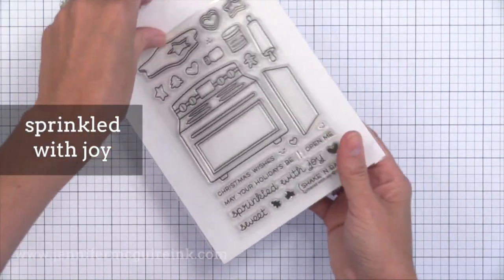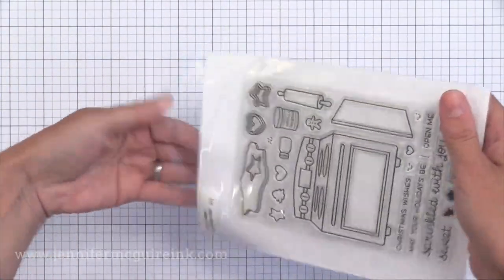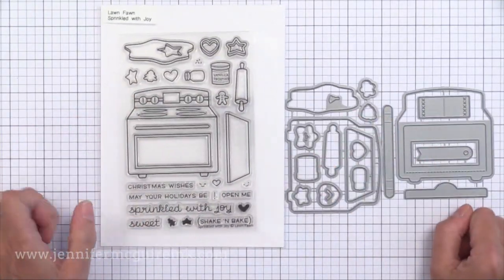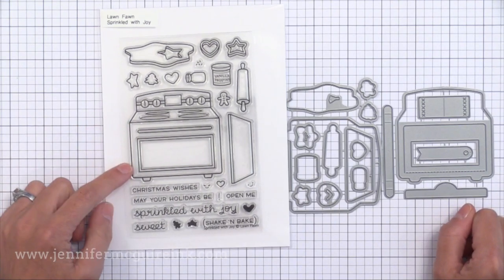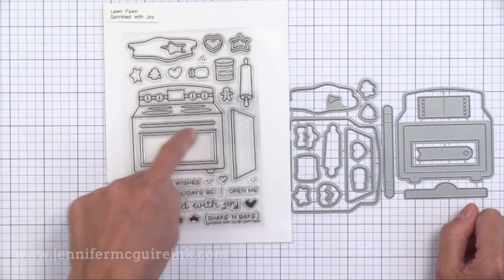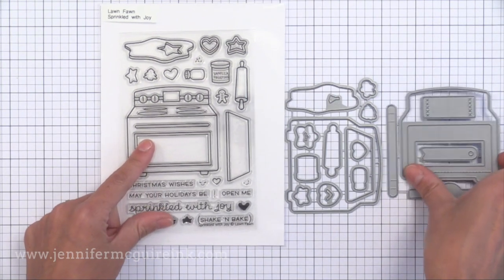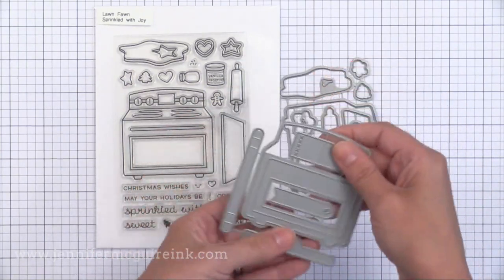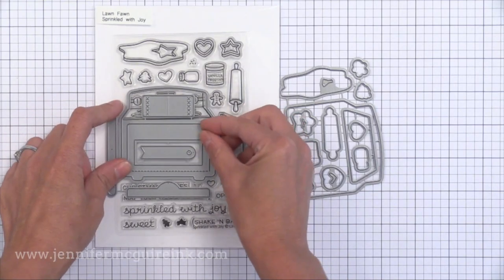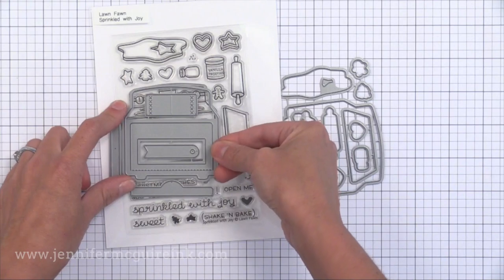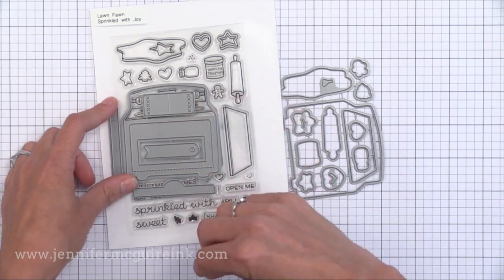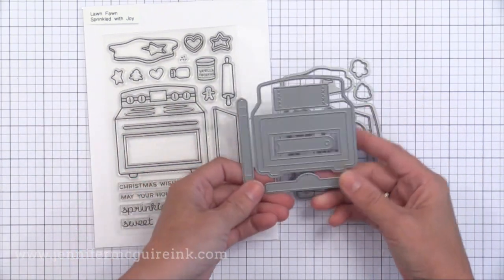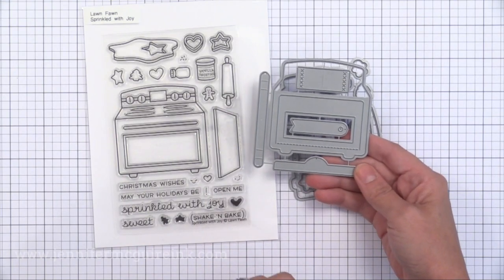Next we have the Sprinkled with Joy stamp set. This is another fun one. There are coordinating dies available for it and there's a die set that allows you to create that oven like a door on that oven so it opens up and you can have something inside the door. It opens up like a flap. You can put like maybe an acetate window and when you open up the card you can see the cookies inside. Or you can use this die that creates a flap so that the door of the oven folds down and you can have a greeting in there. I really like that Lawn Fawn really thinks this through and has all the elements that you need to make the perfect little scene on a card. If you make homemade treats during the holidays you could even make a tag out of the little oven.